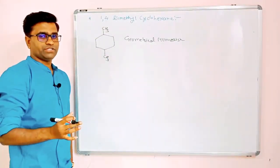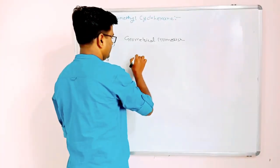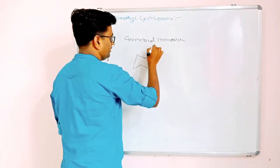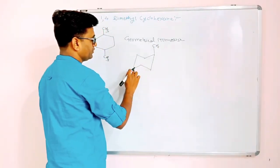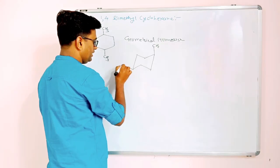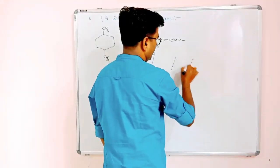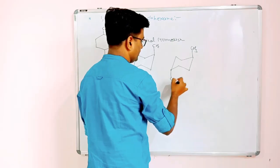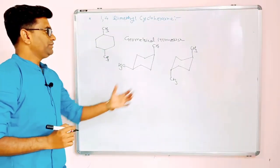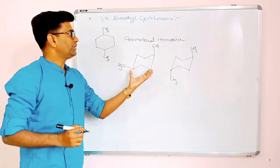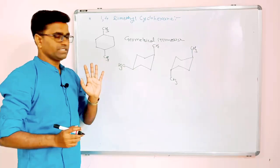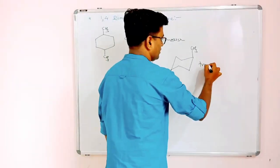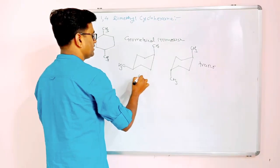So one will be the cis isomer and the second will be the trans isomer. If both methyls are on the same side of the molecular plane, this is called cis-1,4-dimethylcyclohexane. If these methyls are on the opposite side of the molecular plane, this is called trans-1,4-dimethylcyclohexane.